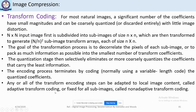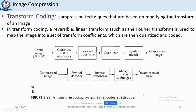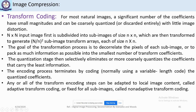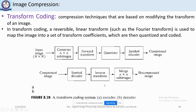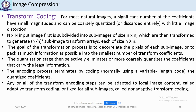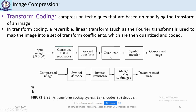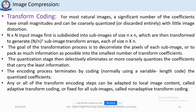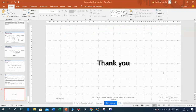Any or all of the transform encoding steps can be adapted to local image content, called adaptive transform coding, or kept fixed for all sub-images, called non-adaptive transform coding. If different steps are applied to different sub-images, it is adaptive; if the same steps are applied to all sub-images, it is non-adaptive transform coding. That's it for this lecture — thank you.